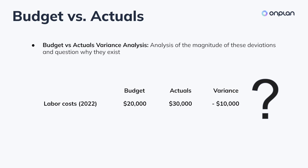Here, you would start asking questions like: did employees take advantage of overtime? Would it have been better if the company outsourced certain job functions? This is the why of Budget versus Actuals variance analysis. It's not only about how much it was missed by, but rather the reasons that it was missed.